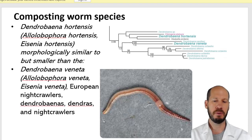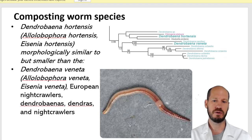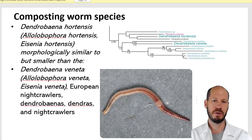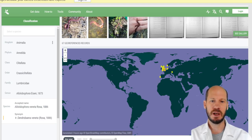Both Dendrobaena species are striped and look a bit different from Eisenia fetida and andrei because they are thicker worms, and the thickness is not evenly distributed throughout the body — the body contracts and enlarges, giving a varying thickness. This uneven, thicker body is a telltale sign. They all have a bulging clitellum, and the position of the clitellum and male pore are very similar to Eisenia, making it hard to distinguish from those features alone.